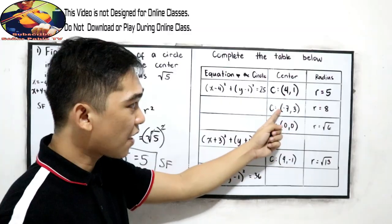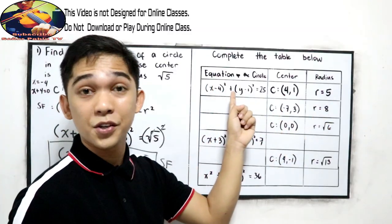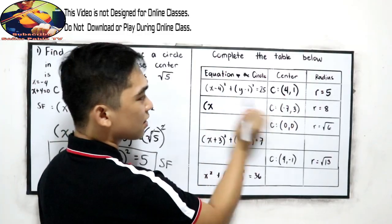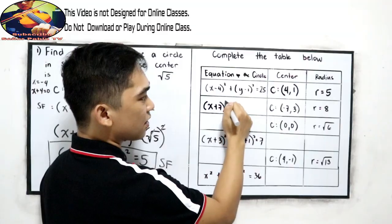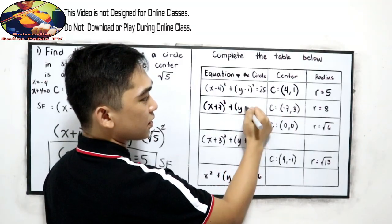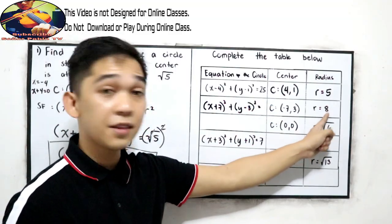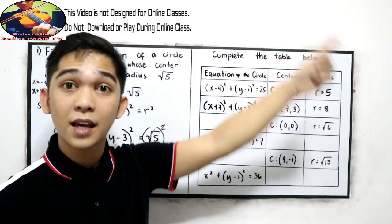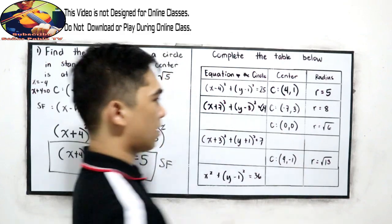Next, given the center and radius, we find the equation of the circle. We get (x plus 7) squared plus (y minus 3) squared equals 8 squared. Squaring 8 gives 64. So the equation is (x plus 7) squared plus (y minus 3) squared equals 64.